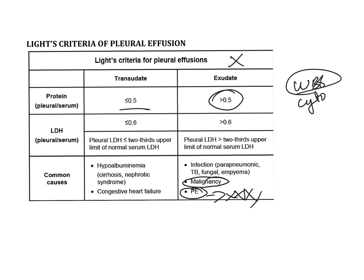For transudate, pleural LDH is less than or equal to two-thirds the upper limit of normal LDH. For exudate, pleural LDH is greater than two-thirds the upper limit of normal serum LDH, because pleural LDH is greater in exudate. Protein is also increased in exudate.